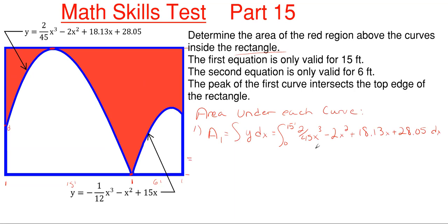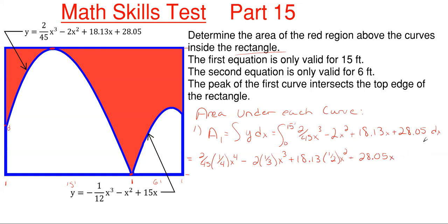The integration of each term separated by pluses and minuses is straightforward — we just integrate each term separately. So we get 2/45 times 1/4 x to the fourth, minus 2 times 1/3 x cubed, plus 18.13 times 1/2 x squared, plus 28.05x, evaluated from zero to 15. Simplifying: 1/90 x to the fourth minus 2/3 x cubed plus 9.065 x squared plus 28.05x, from zero to 15.